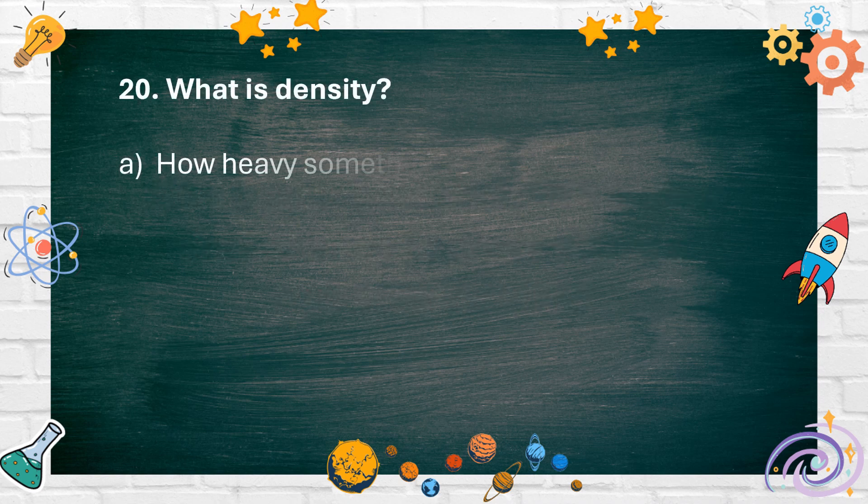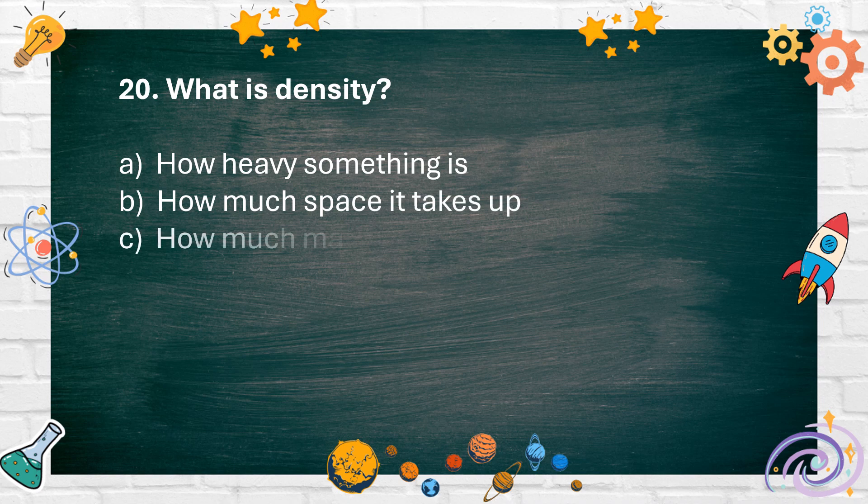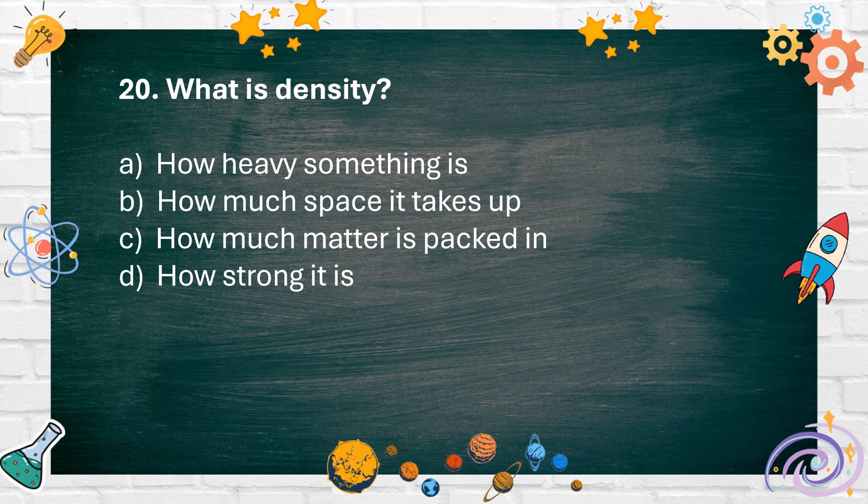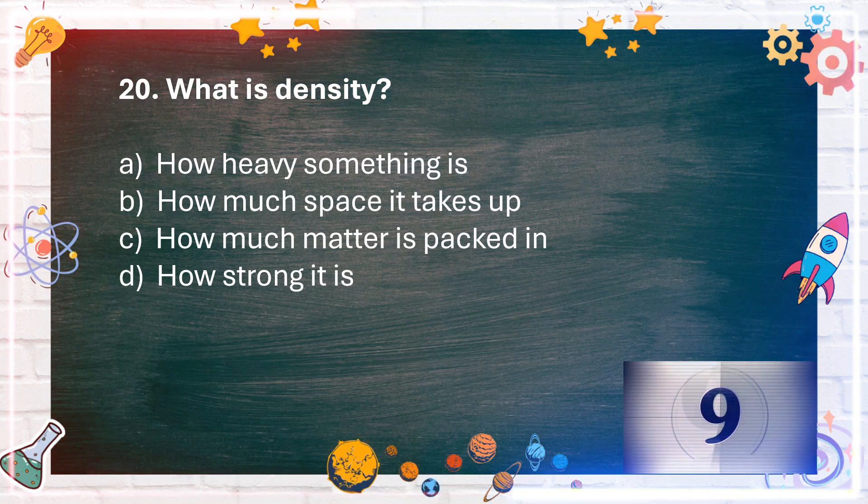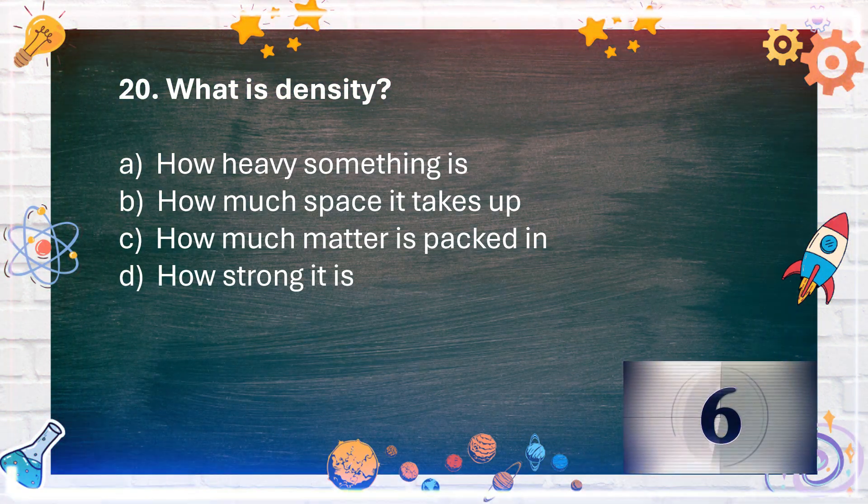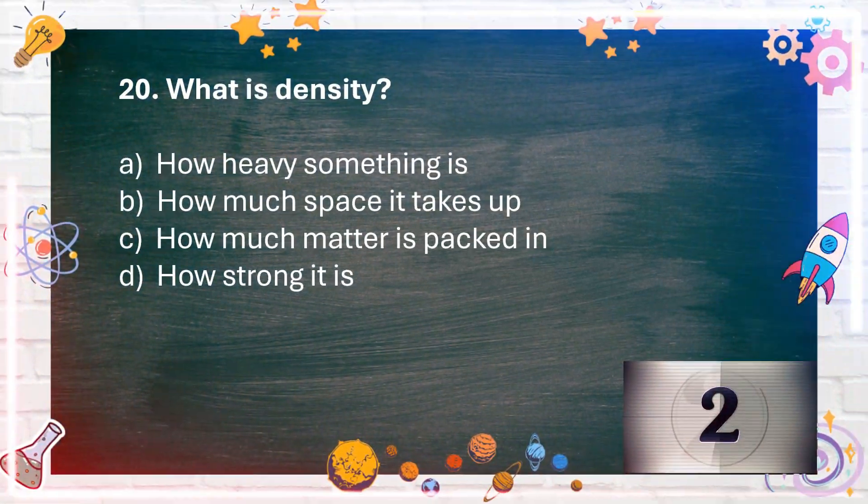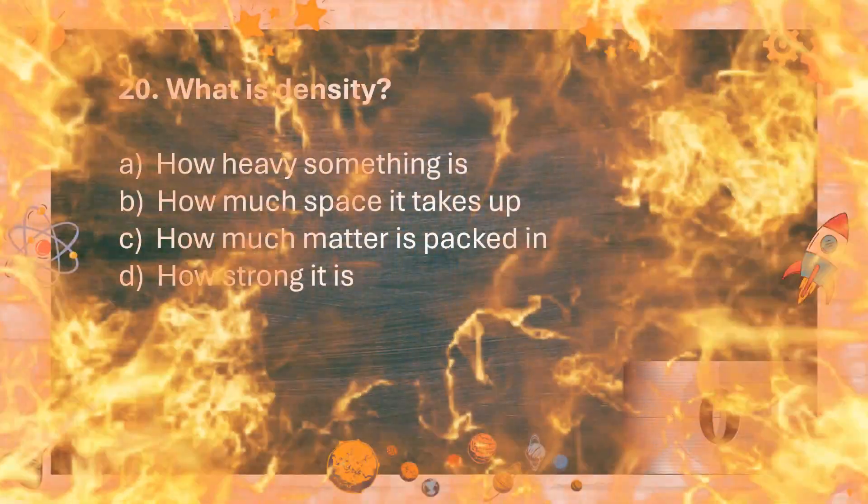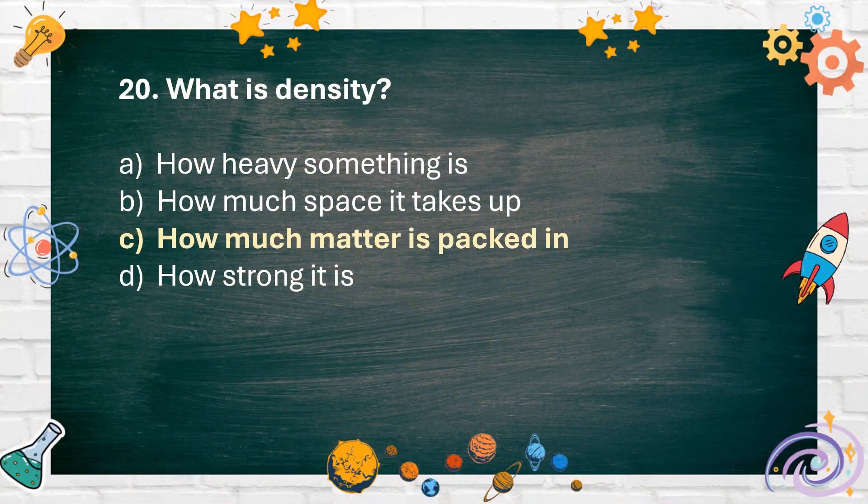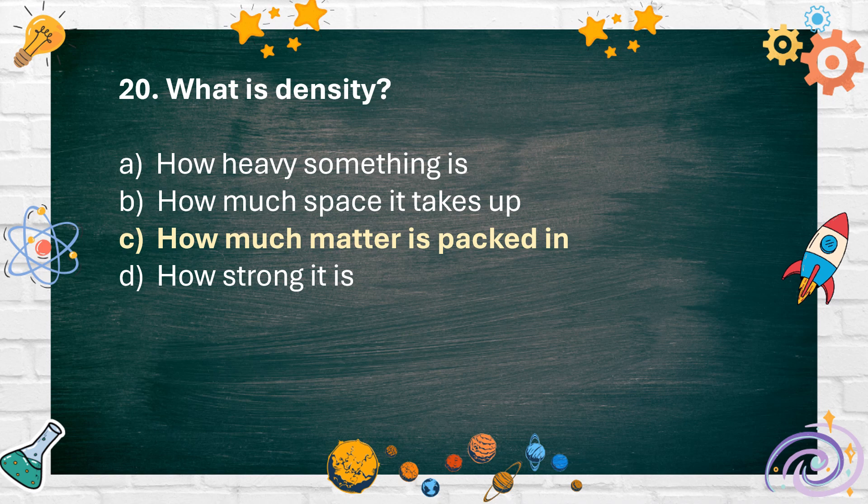Number 20: What is density? A. How heavy something is. B. How much space it takes up. C. How much matter is packed in. D. How strong it is. The answer is C. How much matter is packed in.